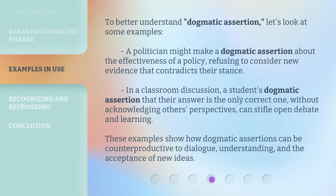To better understand dogmatic assertion, let's look at some examples. A politician might make a dogmatic assertion about the effectiveness of a policy, refusing to consider new evidence that contradicts their stance. In a classroom discussion, a student's dogmatic assertion that their answer is the only correct one, without acknowledging others' perspectives, can stifle open debate and learning.